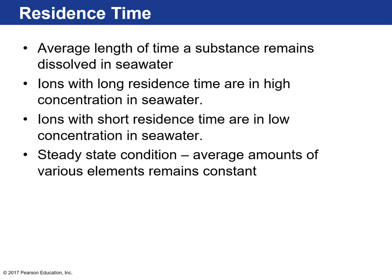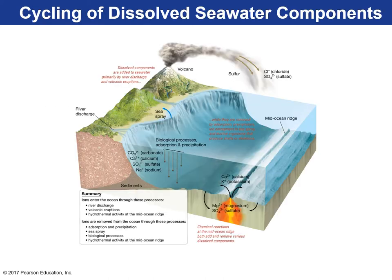Residence time is the average length of time for a substance to remain dissolved in seawater. Ions with high residence time in the ocean are typically in higher concentration. Dissolved ions with short residence times are in lower concentration, meaning some process pulls them out of the ocean. The oceans are in a steady-state condition where the average amount of various elements remains relatively constant.